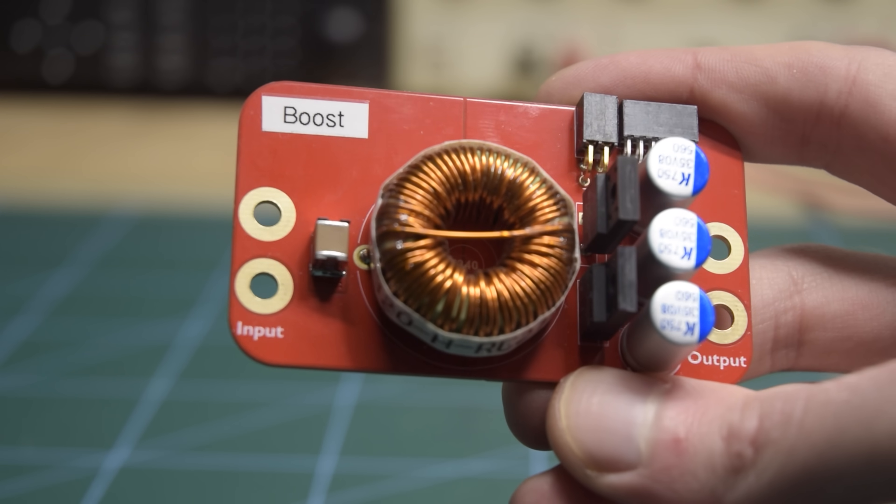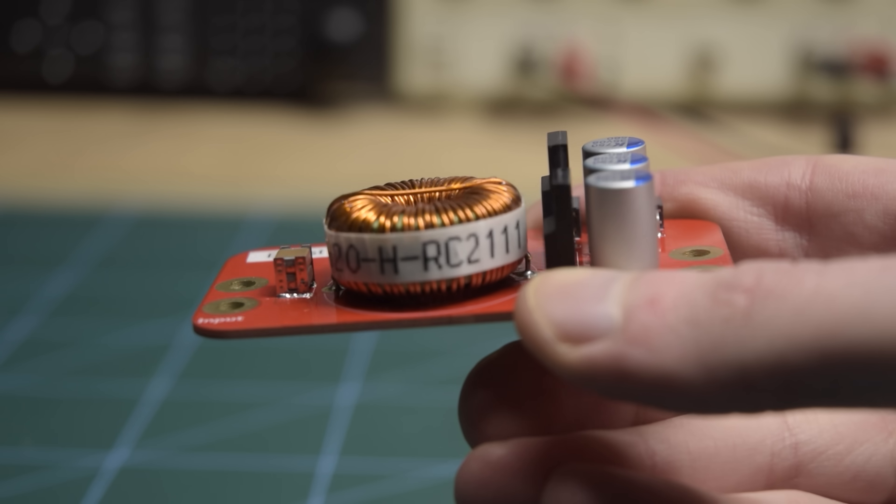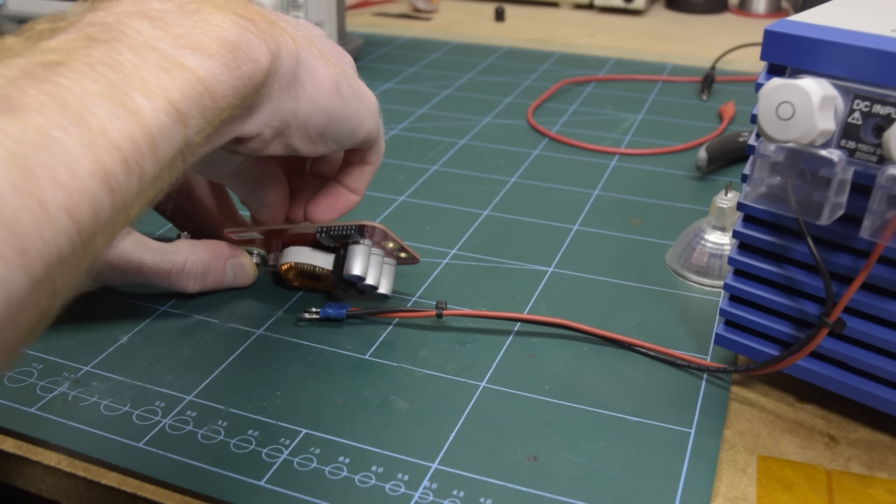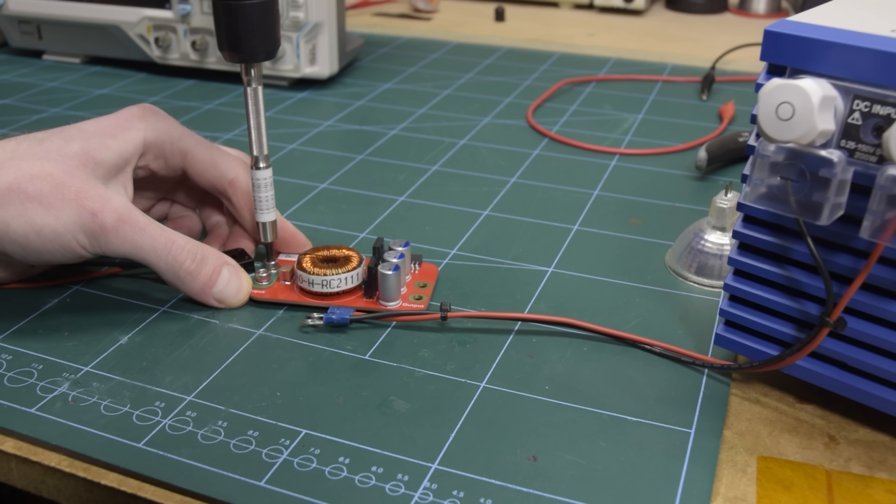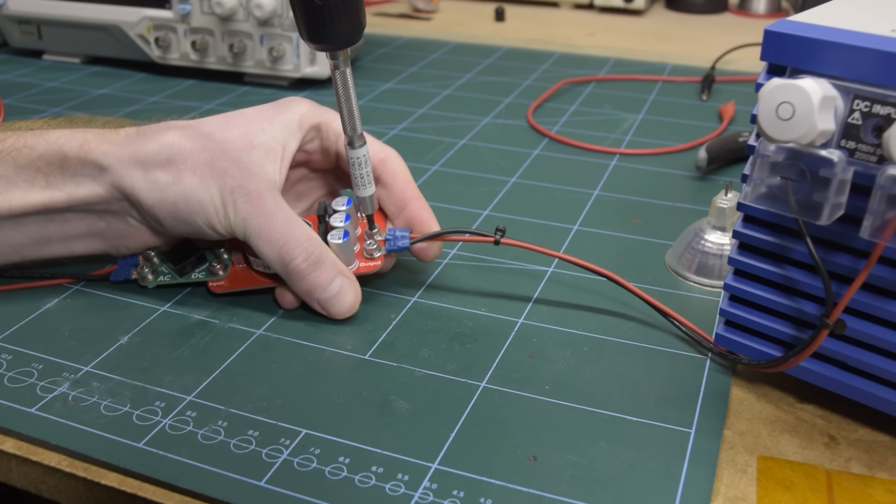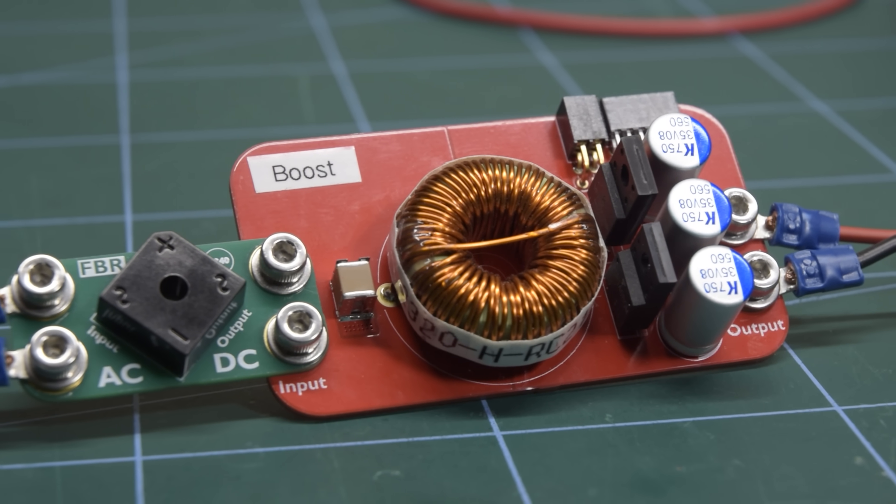Now the reason boost converters are exciting for us is because we can precisely control their input current, irrespective of supply voltage. So all we need to do is hook up a boost converter to the output of our rectifier, and then tell it to draw the perfect amount of current at any given instant, so that we have a sinusoidal current waveform on the AC side of the rectifier. This isn't trivial to implement, but let's give it a go.